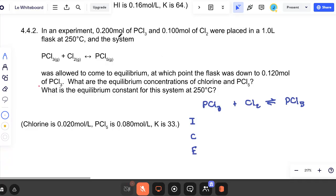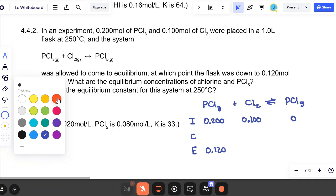And we have initial change equilibrium. And what do we know? We had 0.200 moles per liter of PCl3. We have 0.100 of chlorine. We're dividing by one, so these numbers are not changing. They don't say anything about phosphorus pentachloride, so we can assume there was none. The system comes to equilibrium, at which point we're down to 0.120 of PCl3. Kind of similar numbers to the last one.